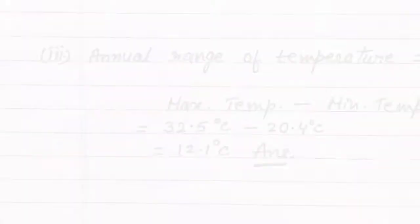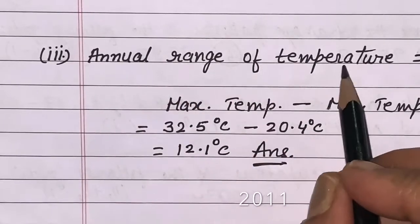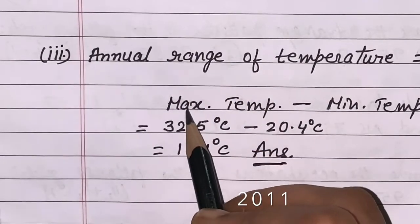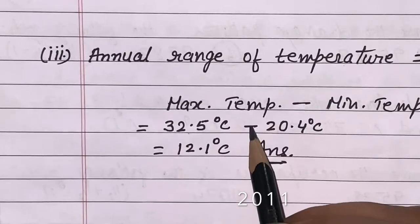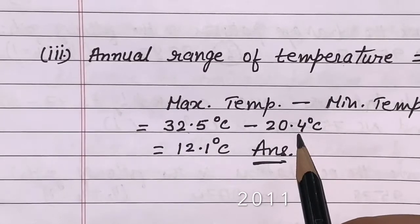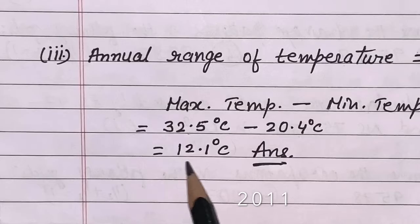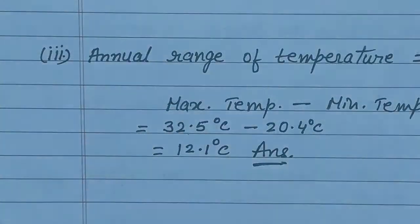Here you will see I have done annual range of temperature equals maximum temperature, that is 32.5 degrees Celsius, minus minimum, that is 20.4 degrees Celsius, and the answer is 12.1 degrees Celsius. Now I am taking the question of 2012.